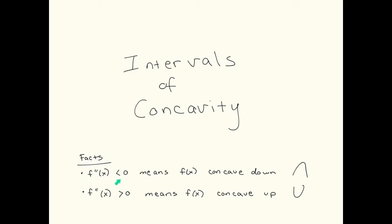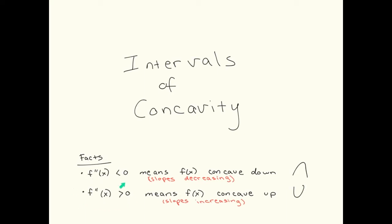If the second derivative is negative, that means the first derivative is decreasing. So if the slopes on the graph are decreasing — starting with a positive slope, becoming less positive, then zero, then negative — the slope is decreasing, and this is what it looks like when it's concave down. Similarly, if the second derivative is positive, that means the slopes are increasing — from negative, to less negative, to zero, to positive. The slopes are getting bigger, meaning the second derivative is positive, and this is concave up.